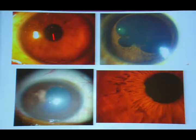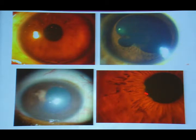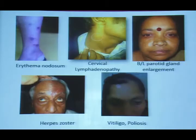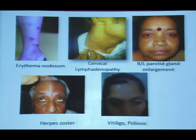If the patient comes with a granulomatous pattern — medium-sized KPs, very large thick mutton fat KPs, iris granulomas and nodules — this is granulomatous uveitis, and we should look at systemic clues such as erythema nodosum or subtle cervical lymphadenopathy.